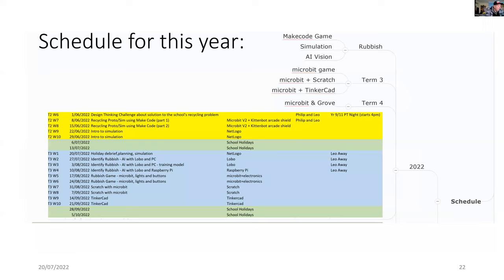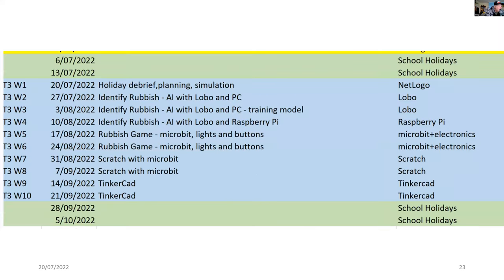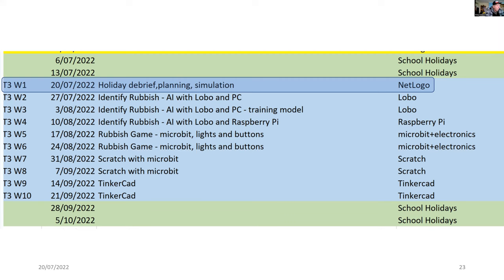So what's the schedule for this year? For this term, we're going to start on simulation using NetLogo. That will be followed by exploring artificial intelligence with Lobe, which comes from Microsoft and needs to be installed on the PC. For the next three weeks, we'll actually work on that — we'll identify rubbish, classify it, and the program will tell us what sort of rubbish it is. After that, we can return to a rubbish game, but this time we'll use MicroBit and port the card game I showed previously onto MicroBit.